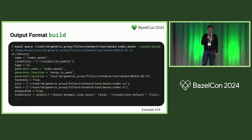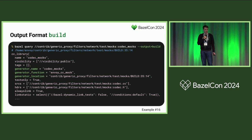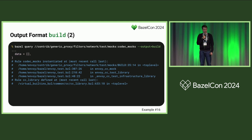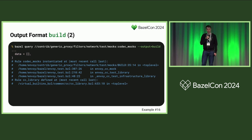To learn about these special attributes, you can use the output format build, which is really useful. It shows your target as if it were defined in the build file, except that macros are expanded, globs are resolved — so you see a more canonical form of your target. You also see extra attributes in green, the location where the target was defined, and select statements are maintained. You even see the traceback of macros, how they were called. This is a really good way to debug your macros and understand what you ended up with, without scrolling through source files.